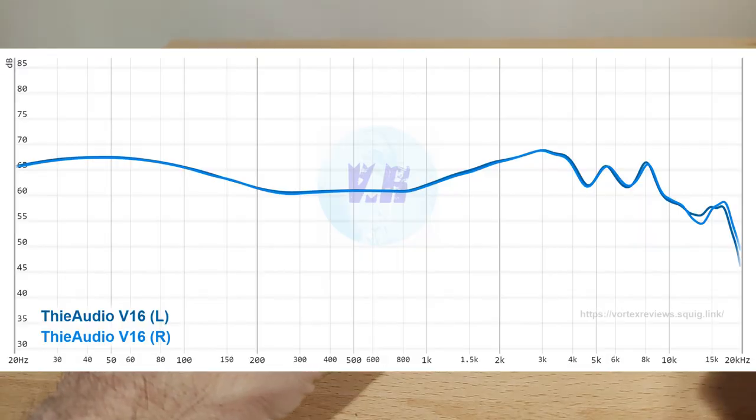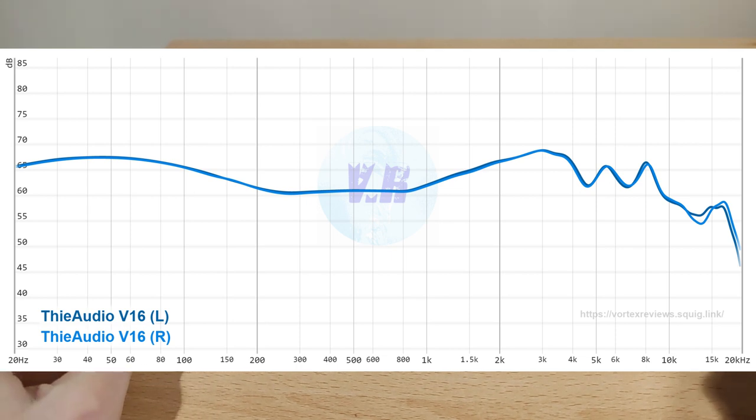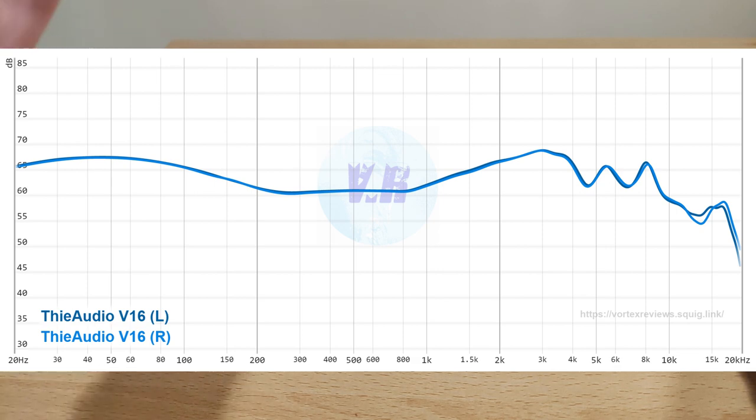I'm going to upload the graph now. The channel matching and driver matching between them is very good, as you can see. Obviously after 10K it falls off, but that could be the coupler not being as accurate above 10K. Below that, the accuracy and matching is very good. It's good to see this quality control, and you should expect it at this price.